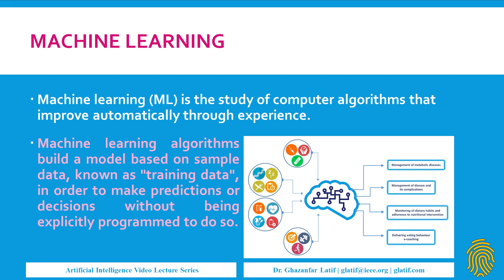Before making a decision, we provide a lot of data along with labels to the machine learning algorithm, and the system learns by itself using specific algorithms like multi-layer perceptron, support vector machine, and Naive Bayes — there are many algorithms available. After training, we give features as input without a label, and the system recognizes which person the image belongs to.